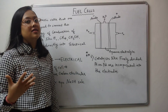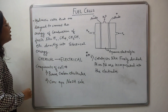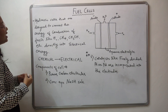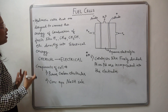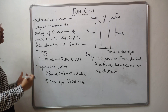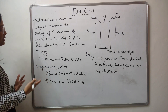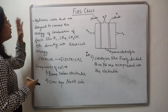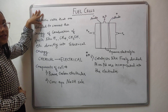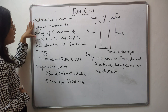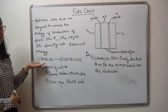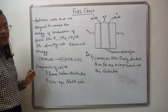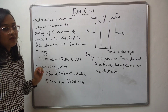A fuel cell can be defined as a galvanic cell designed to convert the energy of combustion of fuels like dihydrogen, methane, methanol, etc., directly into electrical energy. So fuel cells are galvanic cells designed to convert chemical energy directly into electrical energy.